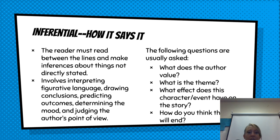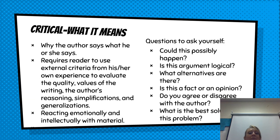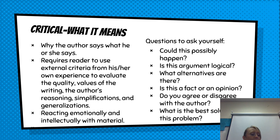So first step: literal. Second step: inferential. And each time your reading is getting more and more complex. The third level is critical reading — that is what it means. That third time you've read a text, you can really start to critically evaluate it. This is where you look at why the author says what he or she says. It requires you to use things you already know from your own experience to make evaluations about the quality of the writing, the values the writer has, the author's reasoning, and any simplifications or generalizations you can make. It's also reacting emotionally and intellectually with the material — the highest level of comprehension and thinking.